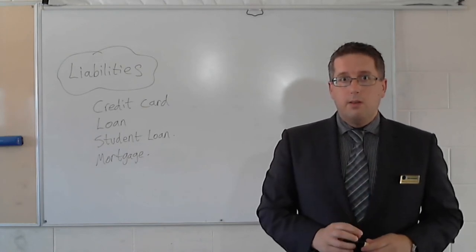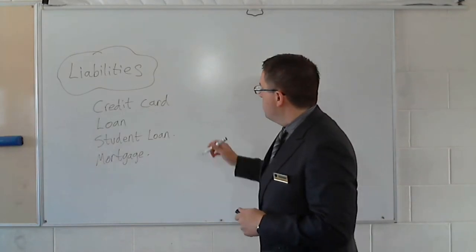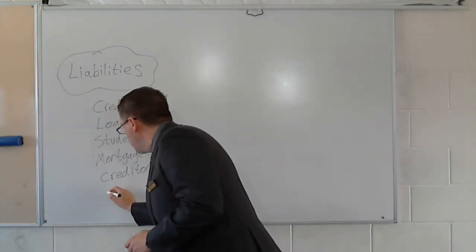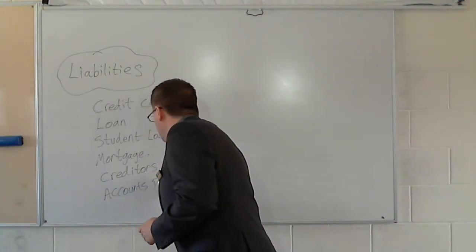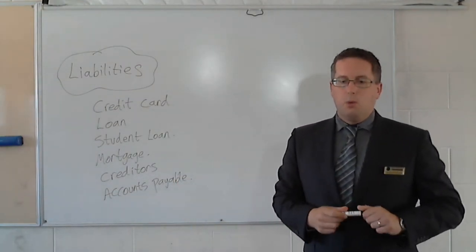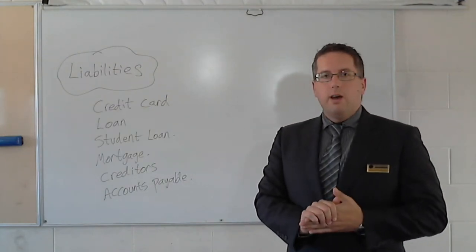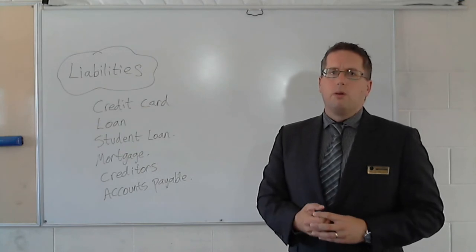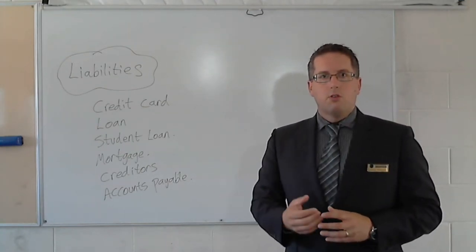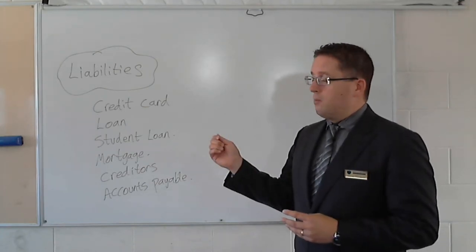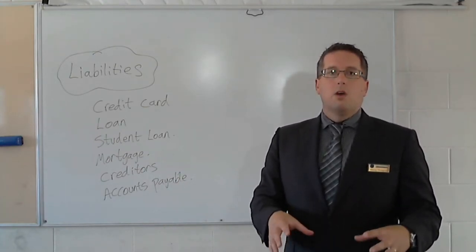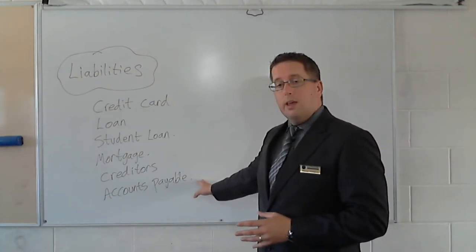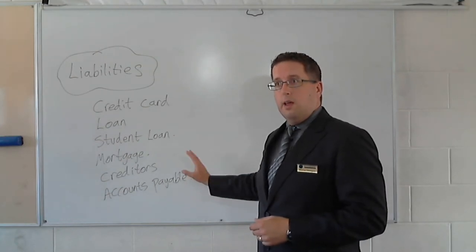There is one other type of liability that we need to look at, more related to businesses. There's a thing called creditors - another term for it is accounts payable. Accounts payable or creditors are amounts where the business has purchased something from a supplier and has yet to pay them. For example, here at PIMS we run a restaurant - we purchase food from food suppliers in town, they deliver the product, we have the product, and we owe the supplier the money but haven't yet paid it. So they are a creditor - we've done the purchase and we owe the money to the other person.